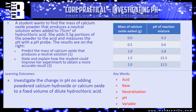On to question 7, the penultimate question: a student wants to find the mass of calcium oxide powder that produces a neutral solution when added to 75 centimetres cubed of hydrochloric acid. She adds 0.5 gram portions of powder to the acid and measures the pH with a pH probe. Part A: predict the mass of calcium oxide that produces a neutral solution using the table of results. Part B: state and explain how the student could improve her experiment to obtain a more accurate result. Pause the video and have a go.